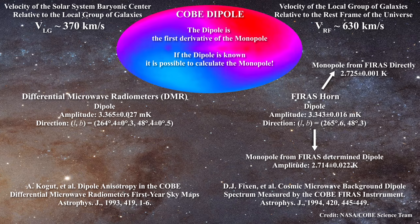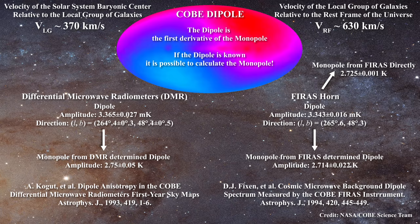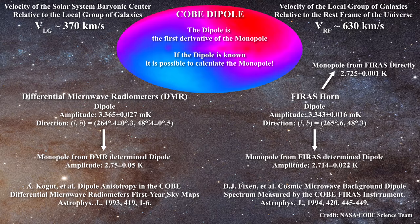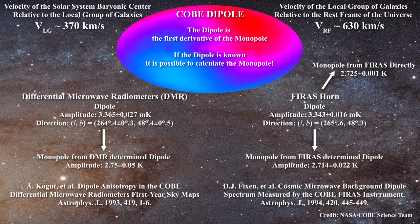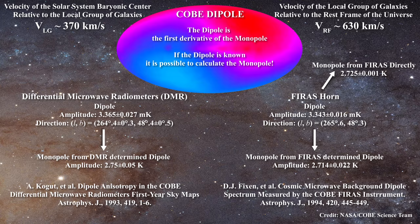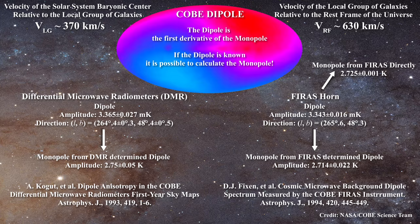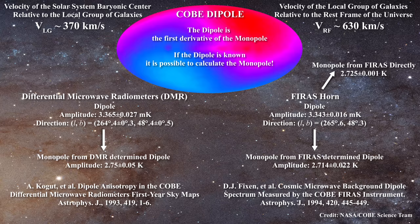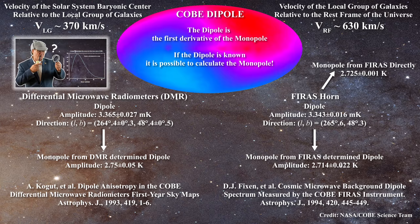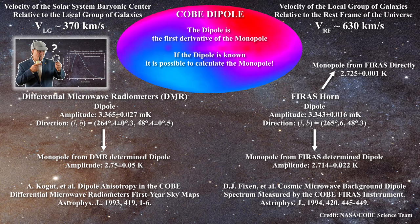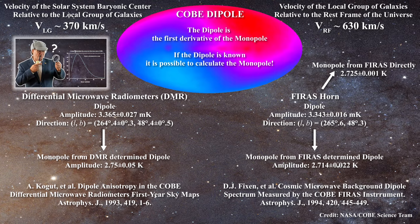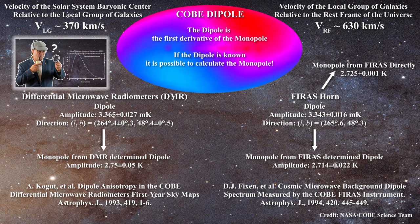The DMR calculated a monopole value of 2.75 ± 0.05 Kelvin using the dipole. Given that this is the case, you have to ask yourselves why the Planck and WMAP teams never calculated the monopole value at L2 using the dipole. In fact, for both WMAP and Planck, the monopole value used is the same one obtained from the FIRAS horn on COBE. The Planck team did try to calculate a monopole in a roundabout way, combining anisotropy results with baryonic acoustic oscillations. So why not just use the dipole measured at L2 and then simply give us the value of the monopole?